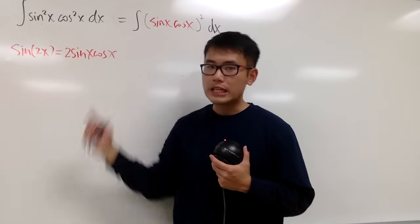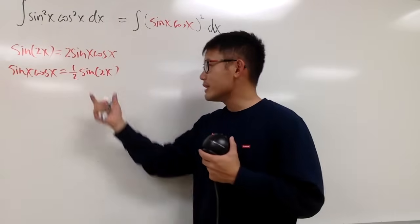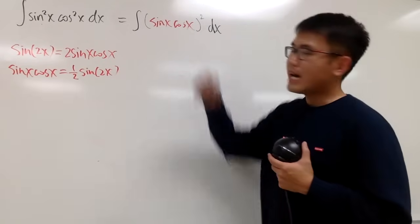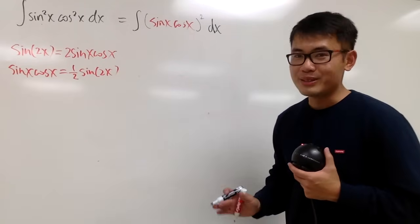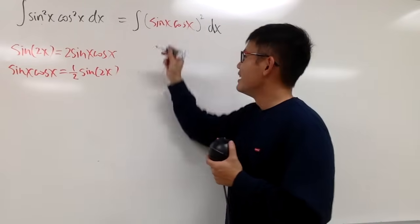And you see, this part is exactly right here. And I just have to divide both sides by 2. And now, I can just actually replace this right here with that. So I can say bye-bye to the cosine. So that's nice, huh?